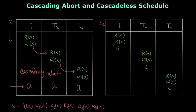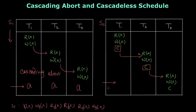Now in schedule S2 we have a small modification: transaction T2 reads the data item only after it has been committed by T1. So T1 writes data item X, but T2 only reads it once it is committed. That means T2 is reading a value of X which is not dirty — which has been committed. Similarly, T2 commits before T3 reads, so T3 is also reading committed data.